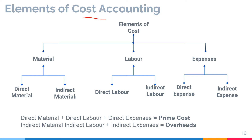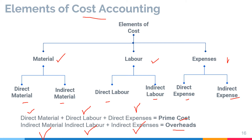Now the elements of cost accounting: when calculating the cost of a particular product, we include material, labor, and expenses. These can be directly or indirectly included. Materials can be direct or indirect; labor can be direct or indirect; and similarly, expenses can be direct or indirect. Adding all direct items — direct material, direct labor, direct expenses — gives prime cost. Adding all indirect items — indirect material, indirect labor, indirect expenses — gives overheads.